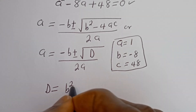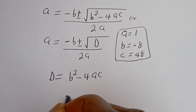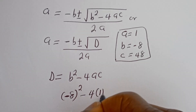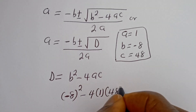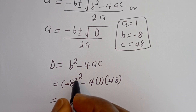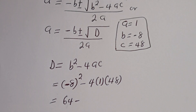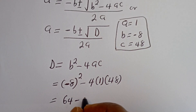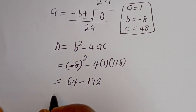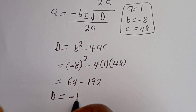The discriminant D is equal to b squared minus 4ac. So D equals minus 8 squared minus 4 multiplied by 1 multiplied by 48. This equals 64 minus 192, which gives D equal to minus 128.